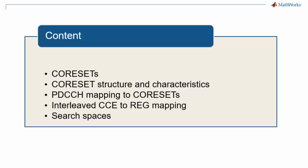We will discuss two different types of mapping, interleaved and non-interleaved, and explain how search spaces enable further reduction of the complexity of control information decoding at the UE.